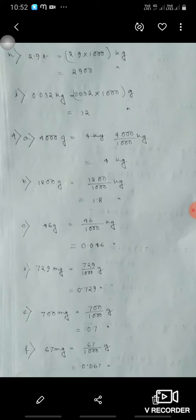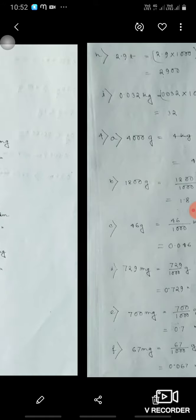46 gram means 46 upon 1000 means 0.046 kilogram. 729 milligram means 729 upon 1000, 0.729 gram. 700 milligram means 700 upon 1000 gram, that is 0.7. 67 milligram means 67 upon 1000, 0.067 gram. 8 milligram means 8 upon 1000 gram means 0.008 gram.